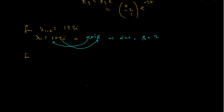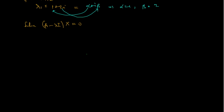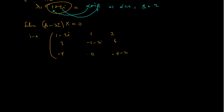To find that, all we need to do is solve (A minus lambda·I)x equals 0. Now solving that, for lambda equals 1 + 2i, we want to solve the system with matrix entries: 1 minus 2i, 1, 2, 3 in the first row; negative 1 minus 2i, 6, negative 4 in the second row; 0, negative 4 minus 2i in the third row. Then x, y, z equals 0.